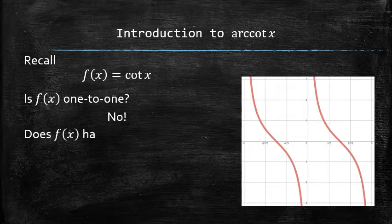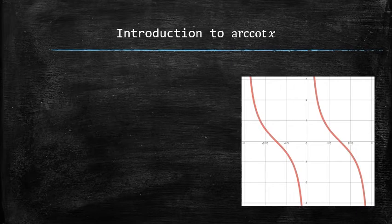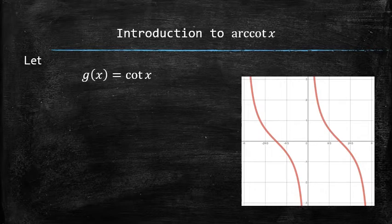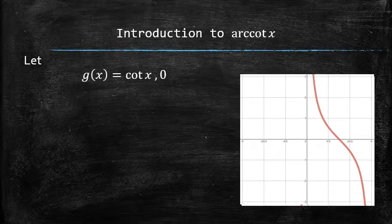Does this function have an inverse? The answer is also no, because only 1 to 1 functions have inverses. Now, let's make a new function g of x from the cotangent of x function by restricting the domain of the cotangent to the open interval between 0 and pi.